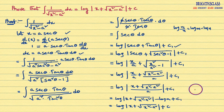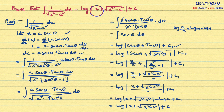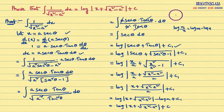Finally, we proved that the integral of 1 divided by square root of x squared minus a squared dx equals log mod x plus root over x squared minus a squared plus c. I hope you are understanding.